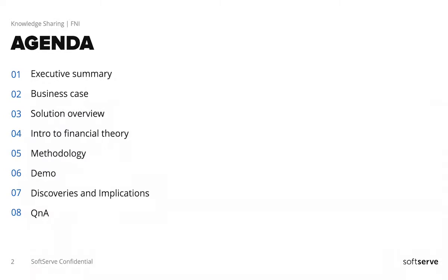In today's agenda, I'll briefly skim through the executive summary — what this project is about. I'll describe the business case: what is this solution for, what business problem does it solve. I'll give a brief overview of the solution architecture, tech stack, and we will dive deep into the methodology and the first step into financial theory, which is a very crucial step because there is a lot of financial context in modeling the stock market trend. After the introduction of methodology, I will show you the actual demo, which is already deployed on GCP cloud. We will close the session with discoveries, implications, discussion, and Q&A.